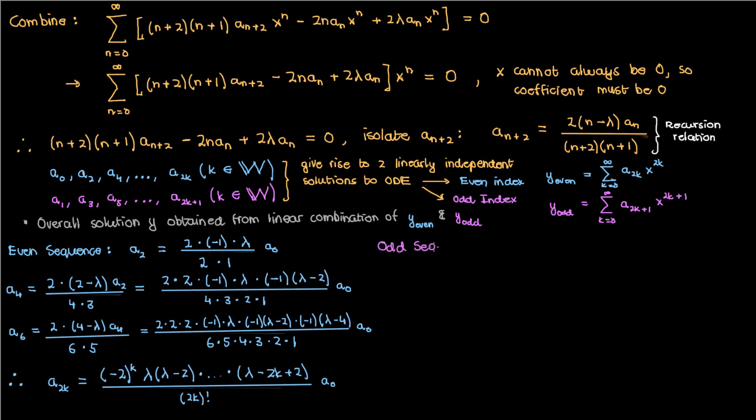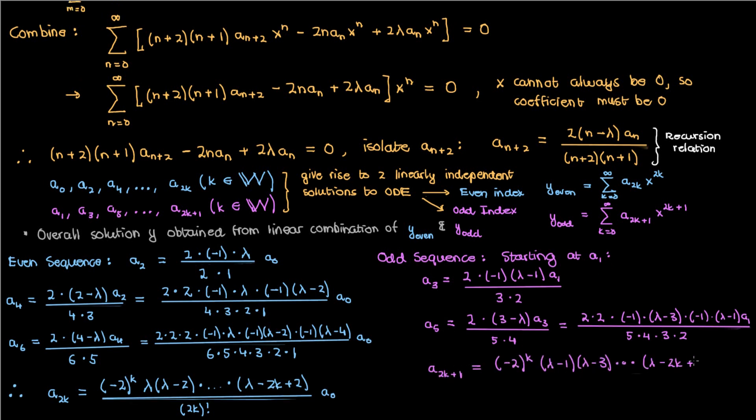Let's now look at the odd sequence. If we start at a_1, we can then use the recursion relation to find a_3. We can then find a_5 in terms of a_3, which we can then plug in to determine a_5 in terms of a_1. Once again, I invite you to pause the video and come up with a general formula for the odd index coefficients in terms of a_1. And when you come up with that formula, this is what it will look like.